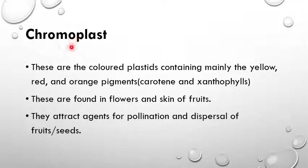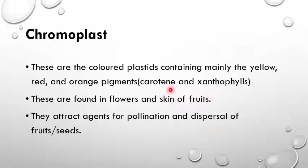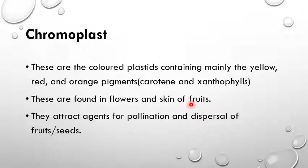Chromoplasts are colored plastids containing mainly yellow, red and orange pigments other than green. The key pigments are carotene (red) and xanthophyll (yellow). They are found in flowers and the skin of fruits, giving them their characteristic colors. Because of their coloring, they attract agents for pollination such as insects and birds, and aid in dispersal of fruits and seeds.